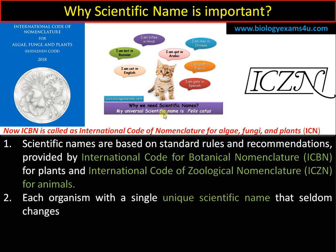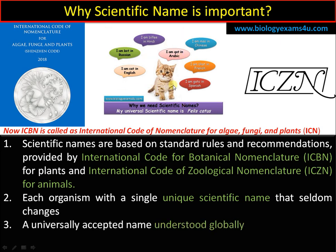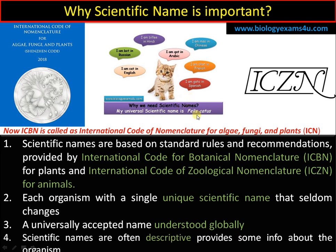Each organism has a unique name. This cat is known to biologists all around the world as Felis Catus, and this name seldom changes — it is a universally accepted name known to everyone around the globe. Additionally, scientific names are often descriptive and provide information about the organism. For example, Catus refers to the domestic cat, while Felis indicates that this cat is related to the big cats — the lion, tiger, etc.